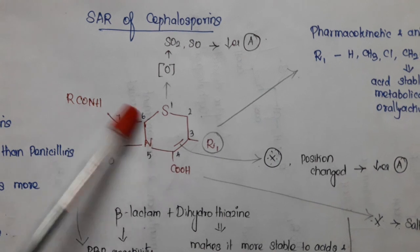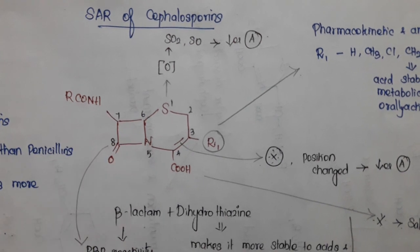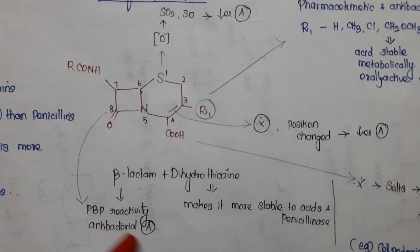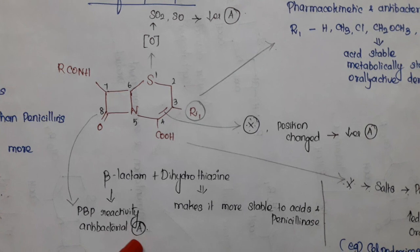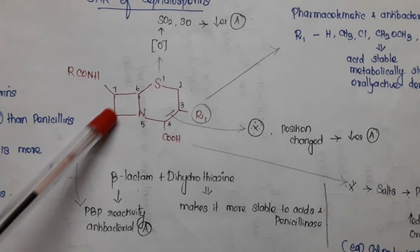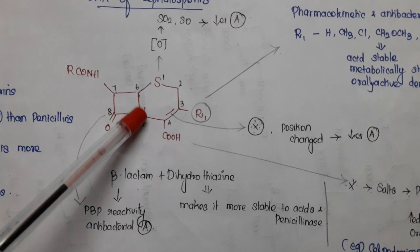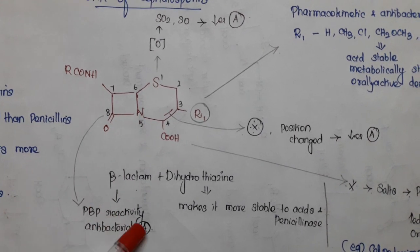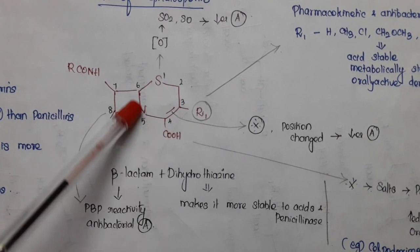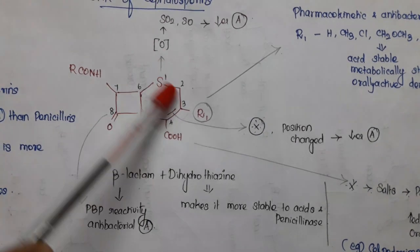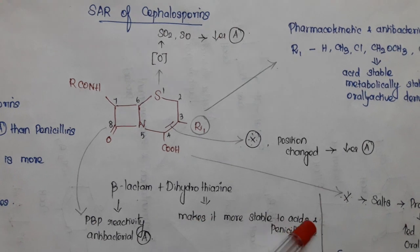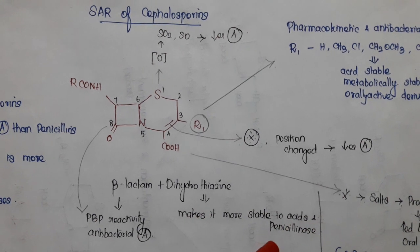What is the role of the beta-lactam ring? That is important for penicillin binding protein reactivity and antibacterial activity. In that beta-lactam, the nitrogen and carbonyl group are essential for this reactivity and antibacterial activity. The dihydrothiazine ring makes it more stable to acids and penicillinase.